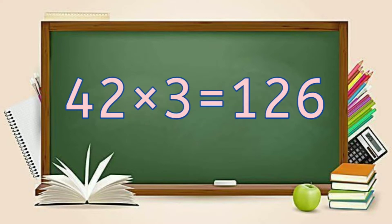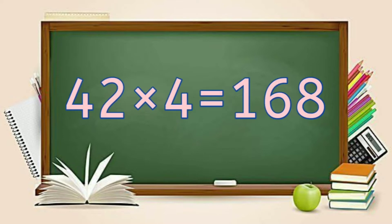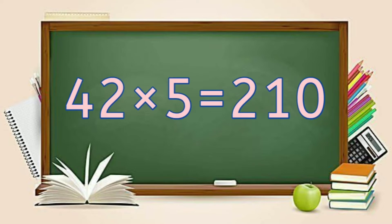42, 3's are 126. 42, 4's are 168. 42, 5's are 210.